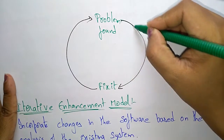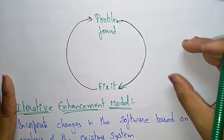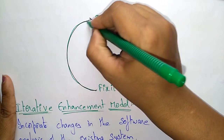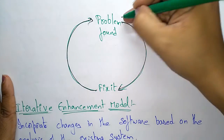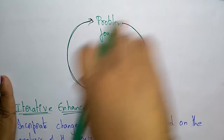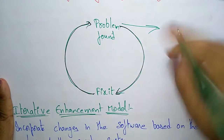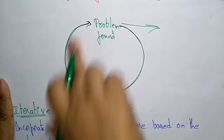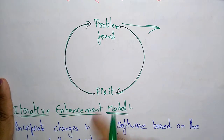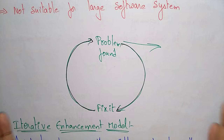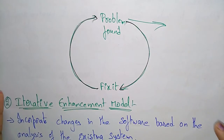Whenever a problem is found, try to fix it before proceeding to the next step, then continue with the work. If again a problem is found, try to fix it — the loop keeps continuing and is not going forward. Only if no problem is found does it move to the next step. That's why the quick fix model is not suitable for large software systems, where problems may be harder to isolate.